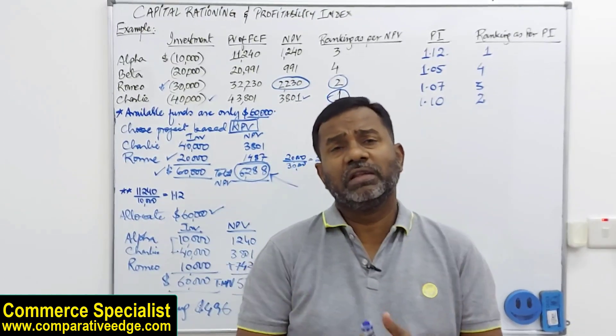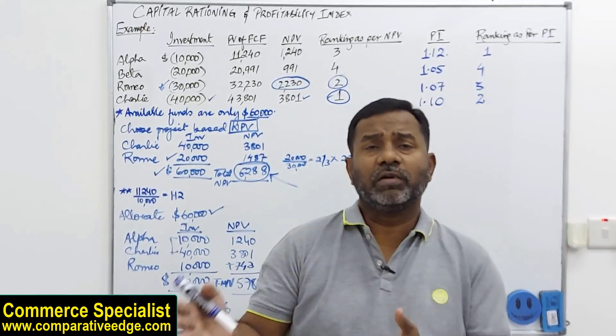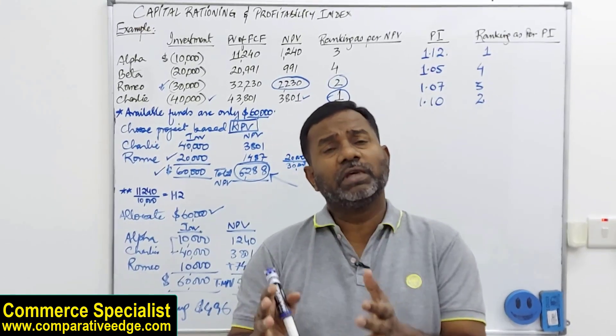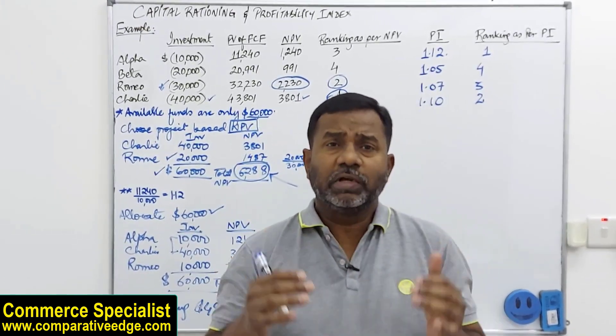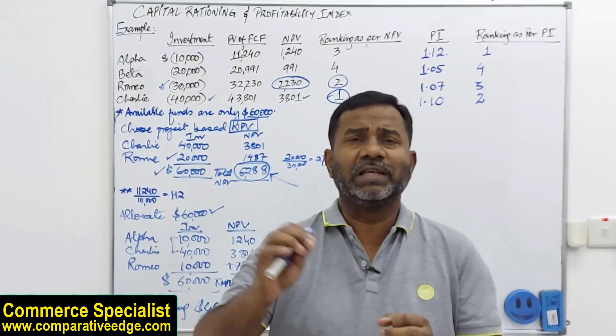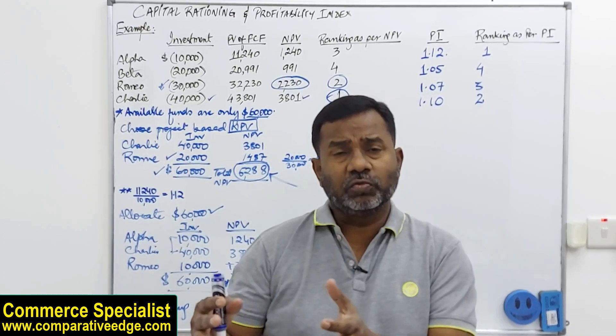Another thing you need to understand: when we are talking about capital rationing, there are two types of capital rationing. One is known as soft capital rationing, the other is known as hard capital rationing. Soft capital rationing means that the management of the company has decided that they are not going to invest more than X amount of money in the available projects. So the constraint is very much internal.